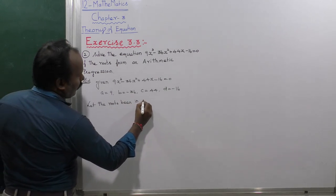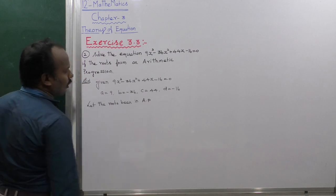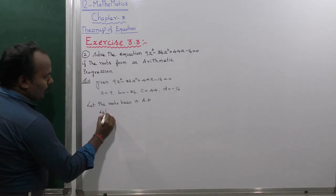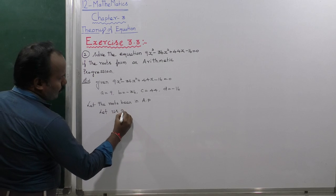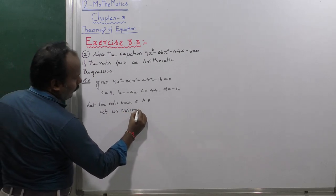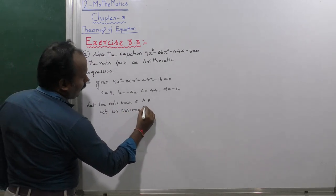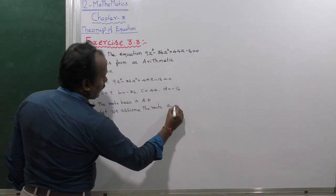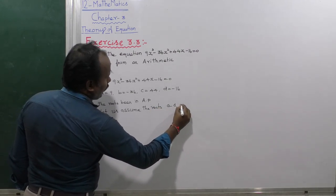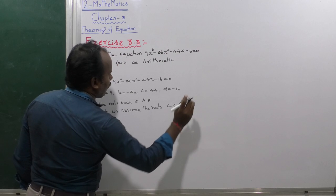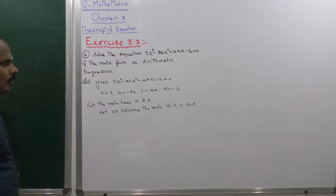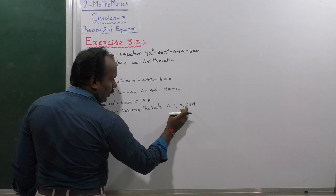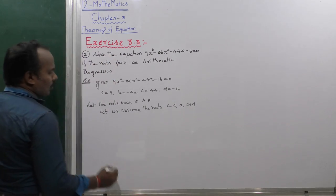Let us assume the roots are in AP. So let the roots be a minus d, a, and a plus d. We need to find the values of a minus d, a, and a plus d.